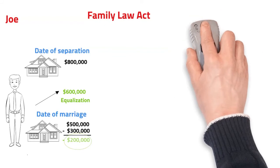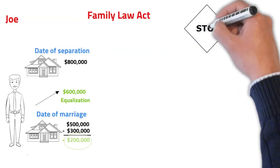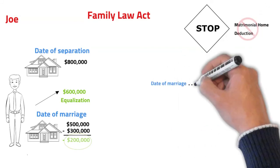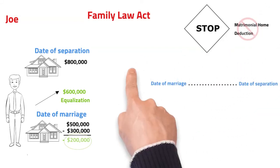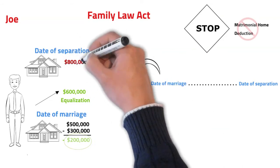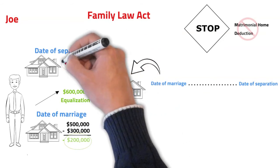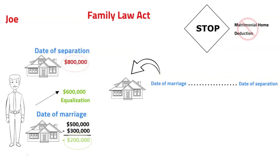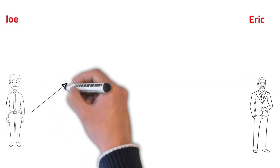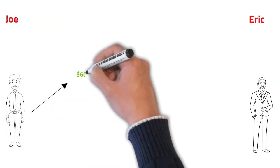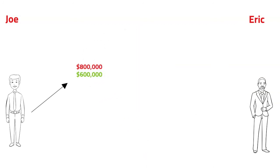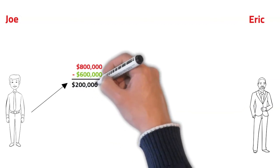But Ontario's Family Law Act says not so fast — deductions for matrimonial homes are not permitted. This exception in the Family Law Act requires us to look at assets accumulated outside of the marital period, and it has the effect of forcing Joe to equalize the entire equity of the house from the date he purchased it to the date of separation. This is great for Eric but bad for Joe. Had the regular rule of deductions applied, he would have equalized $600,000 as opposed to the full $800,000. When we split that difference, he's losing $100,000.